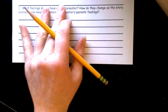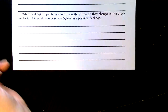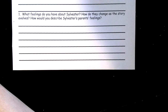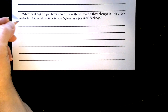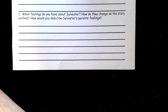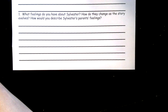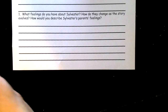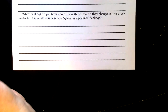Down here for number one, it says: what feelings do you have about Sylvester? That's one question. And it says: how do they change as the story evolves? Evolves just means as the story goes on or the story develops — how do they change throughout the story? And then the last question says: how would you describe Sylvester's parents' feelings? So we have three different questions to answer there, and I'm going to help you write sentence starters for these questions.